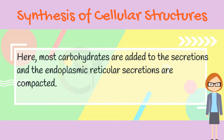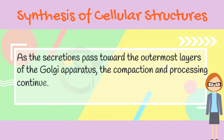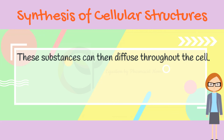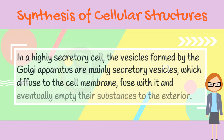Here, most carbohydrates are added to the secretions, and the endoplasmic reticular secretions are compacted. As the secretions pass toward the outermost layers of the Golgi apparatus, the compaction and processing continue. Finally, small and large vesicles break away from the Golgi apparatus carrying the compacted secretory substances. These substances can then diffuse throughout the cell. In a highly secretory cell, the vesicles formed by the Golgi apparatus are mainly secretory vesicles, which diffuse to the cell membrane, fuse with it, and eventually empty their substances to the exterior via a mechanism called exocytosis.